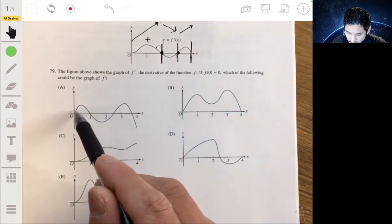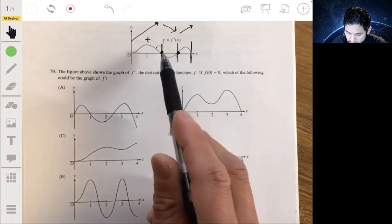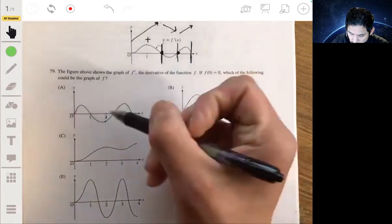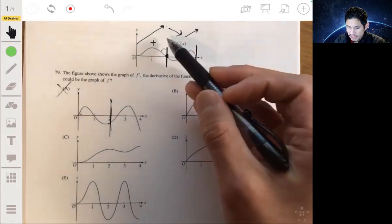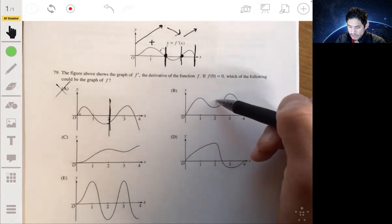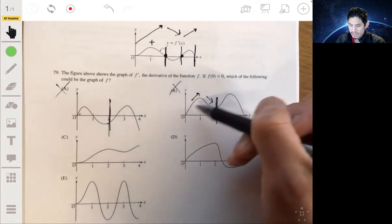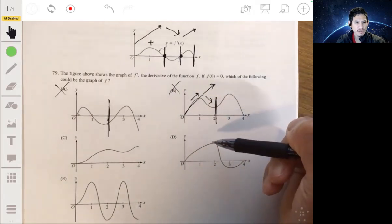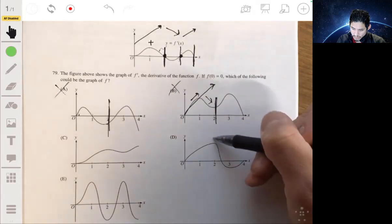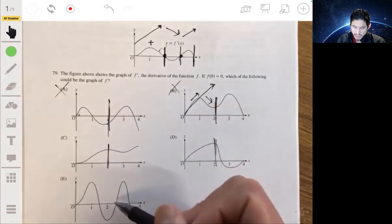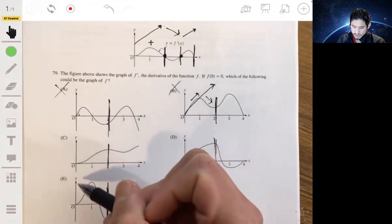It's not going to be A because it goes up, it's positive here, then it goes below. It has to stay increasing all the way to two, so this is out. We want to look at graphs that are increasing up until two. B is out as well. D is all right so far, C checks out, and E we can eliminate because it starts decreasing before two. We're down to C and D.